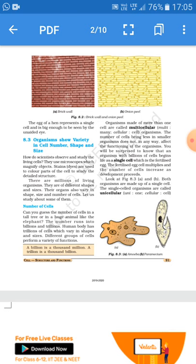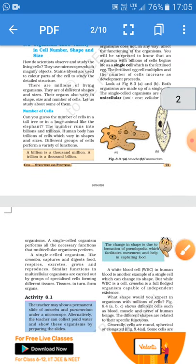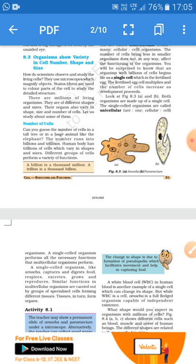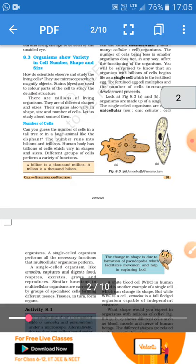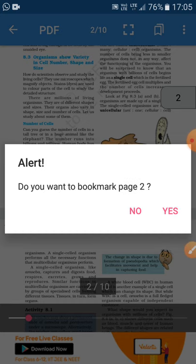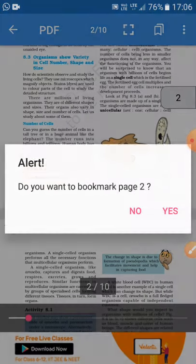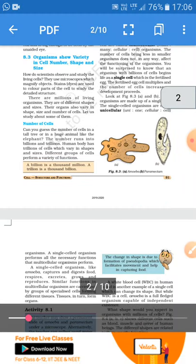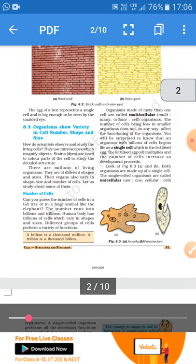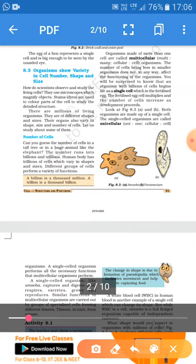Now organisms can be divided into different categories on the basis of number of cells they have. For example, there are two types of organisms: unicellular organism and multicellular organism. Unicellular organisms are those whose body is made up of single cell like amoeba, paramecium, and multicellular organisms are those whose body is made up of many cells.